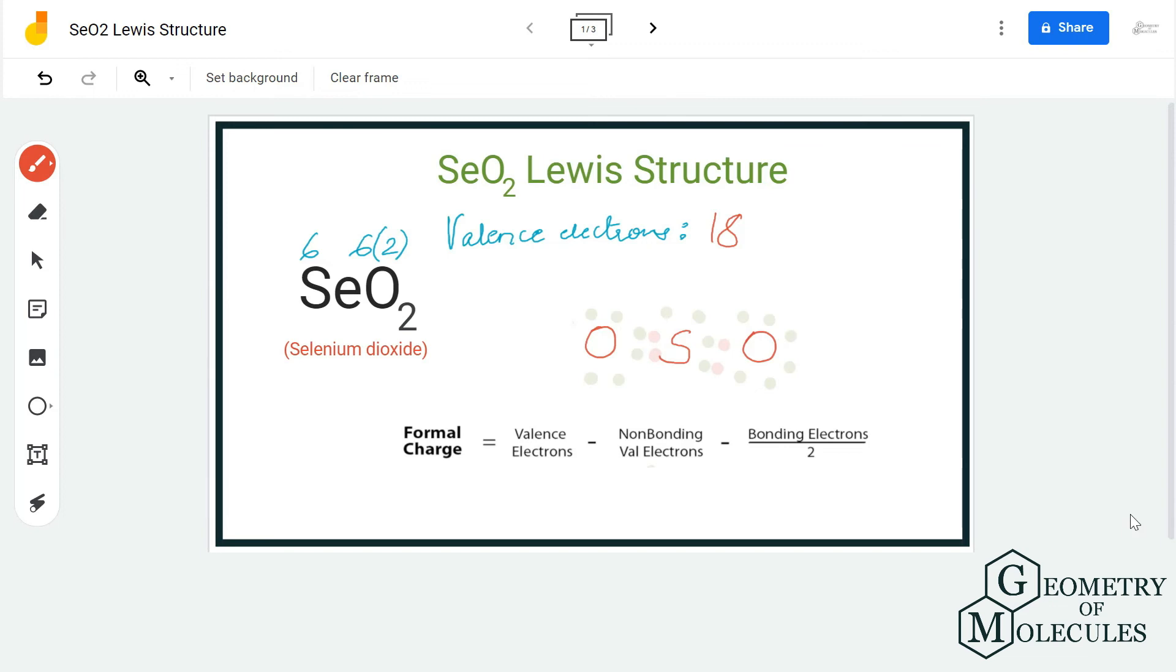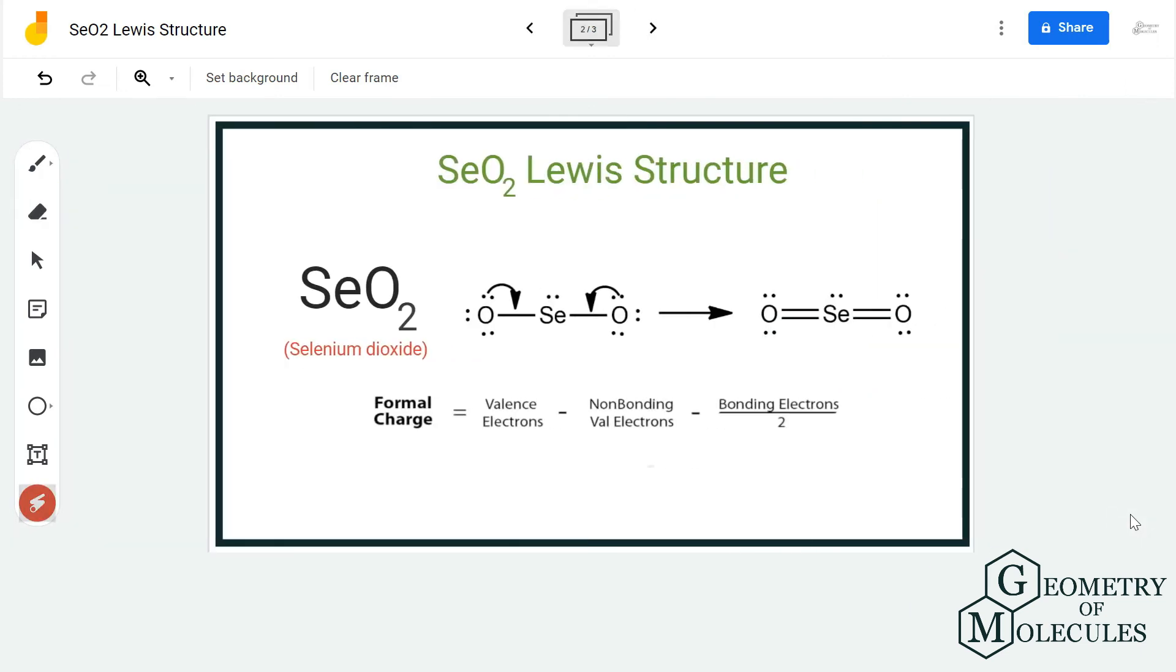What we are going to do is shift another pair of electrons to the center and then calculate the charges. Forming a double bond on both sides, you will get formal charge of zero on all atoms, and hence this is the Lewis structure of selenium dioxide.